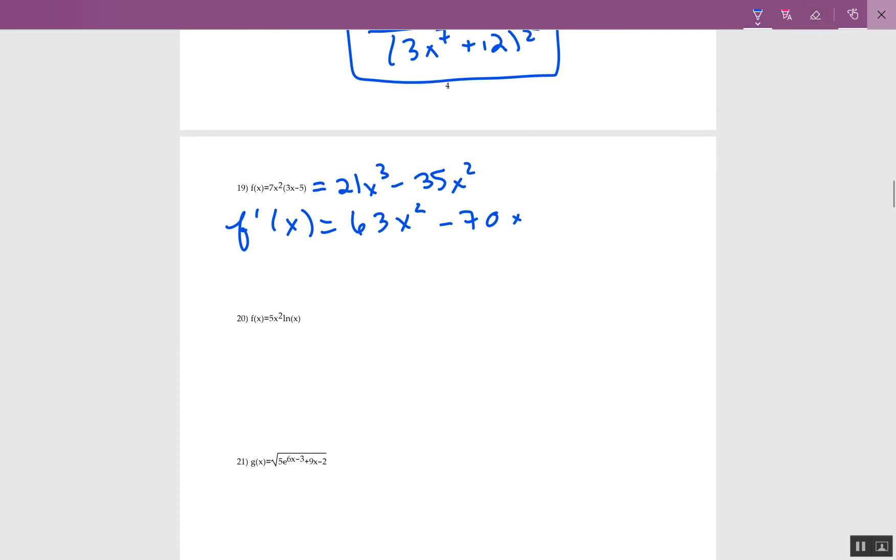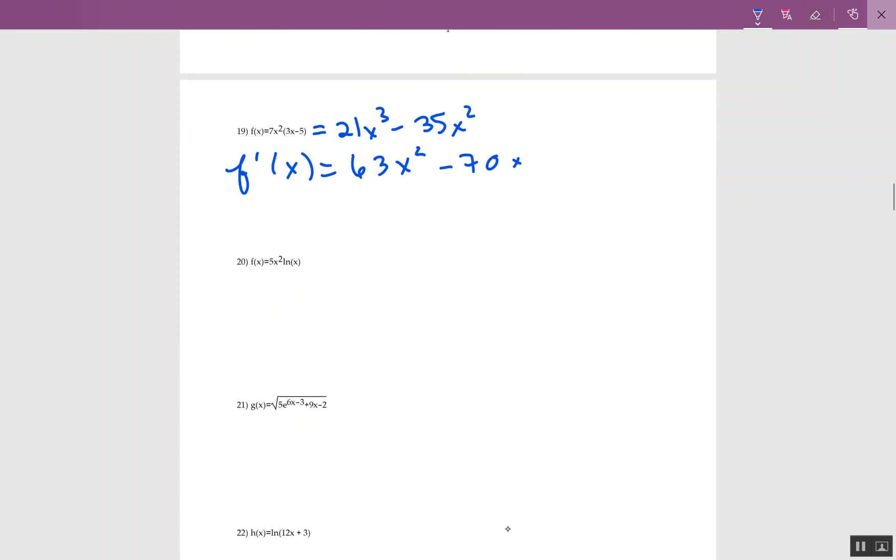I just wrote on the paper in a weird place. So let's get rid of that. I don't want you to think what's that. This one, though, this one I can't get rid of. This one is going to be the product rule. It's 5x squared times natural log of x.